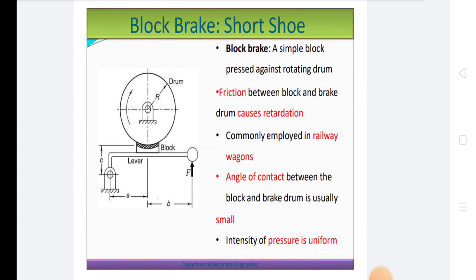After this there is new concept that is block brake or short shoe. In block brake or shoe brakes, a simple block presses against a rotating drum. Friction between block and brake drum causes retardation commonly employed in railway wagons. Angle of contact between the block and brake drum is usually small.